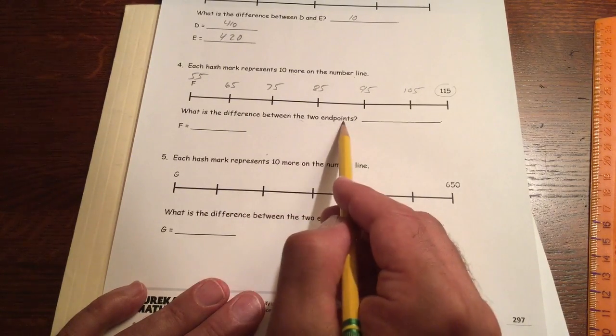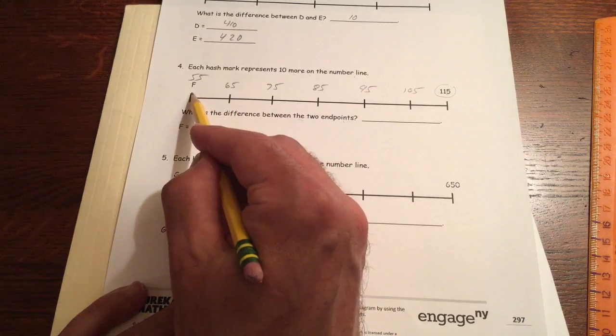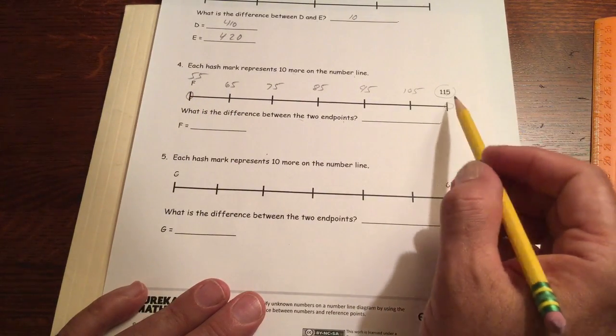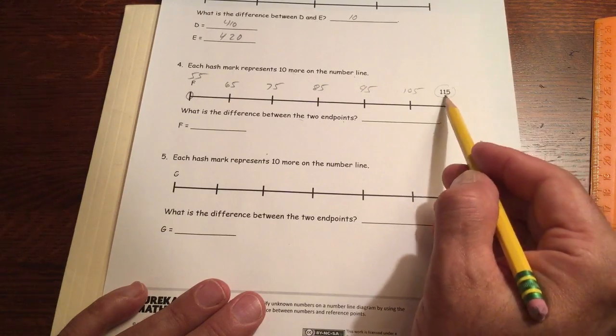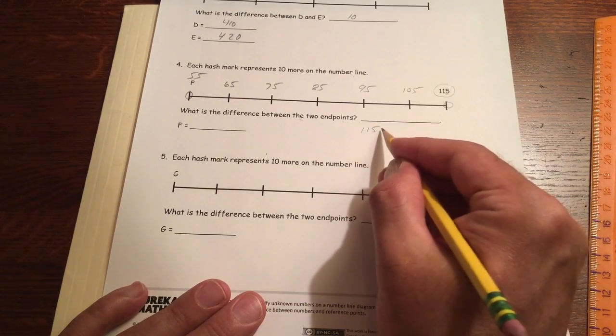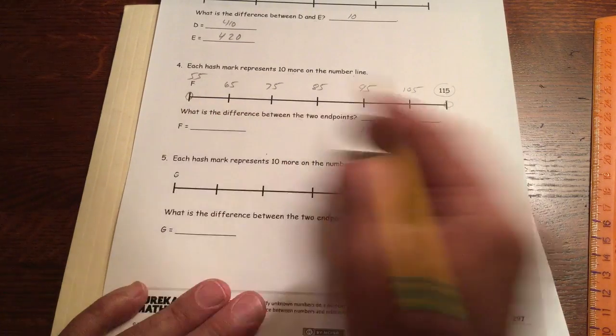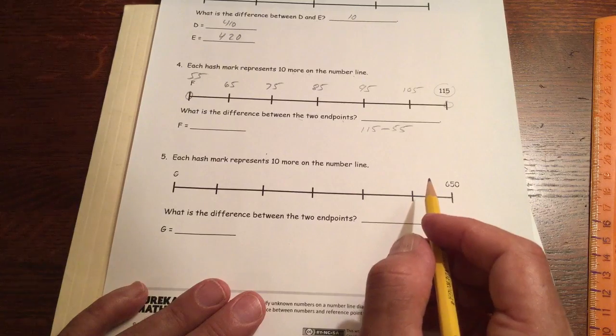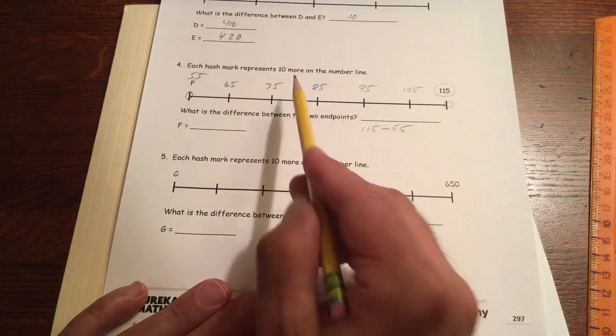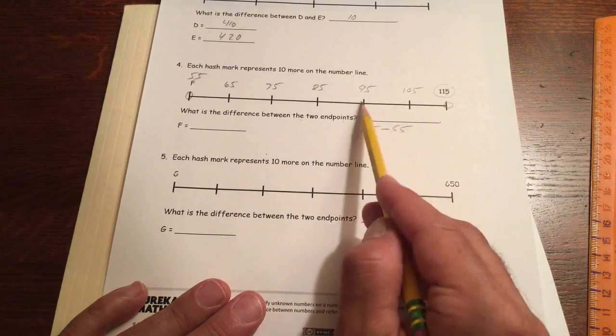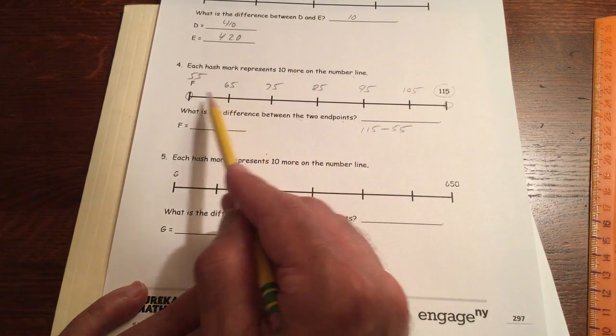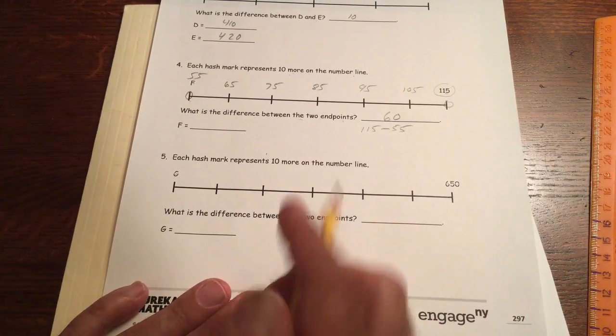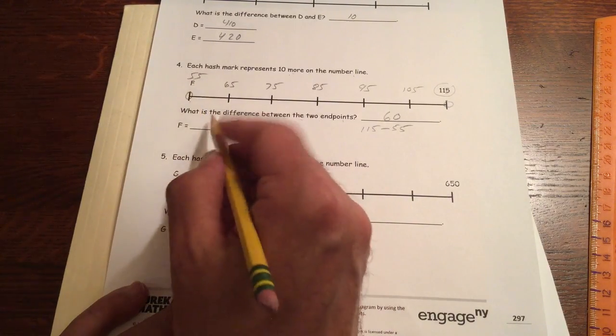What's the difference between the two endpoints? So endpoints are the left end and the right end. So the difference between the two endpoints is 115 minus 55. But you don't really have to do that subtraction to figure it out because we're counting by 10s, right? So it's 10, 20, 30, 40, 50, 60. The difference is 60. And F is 55.